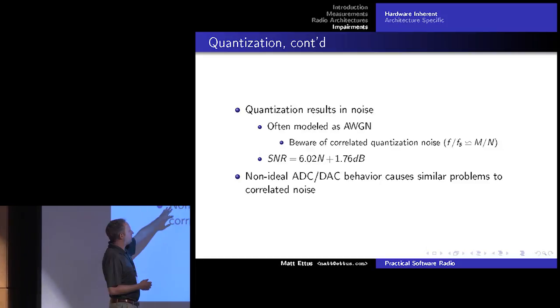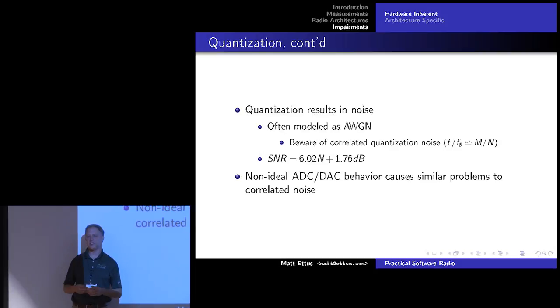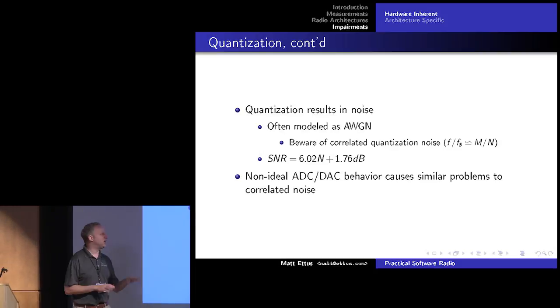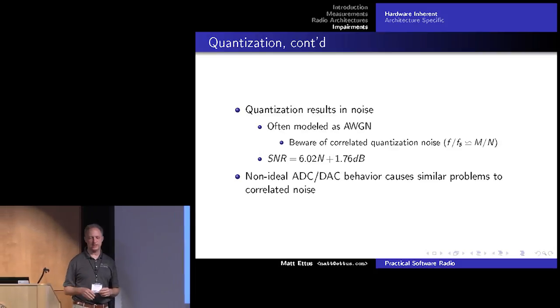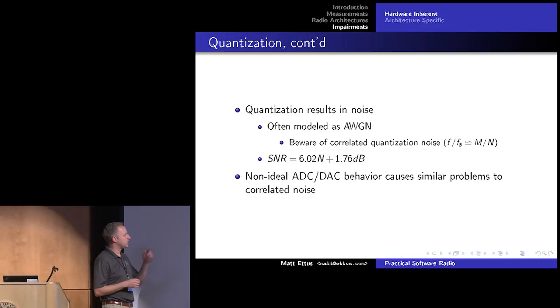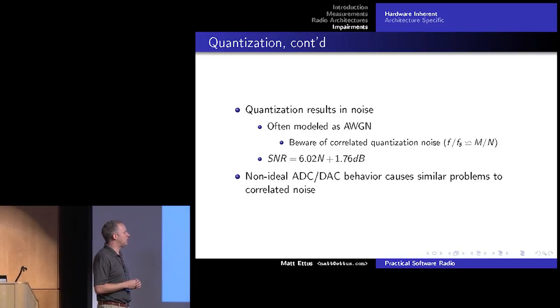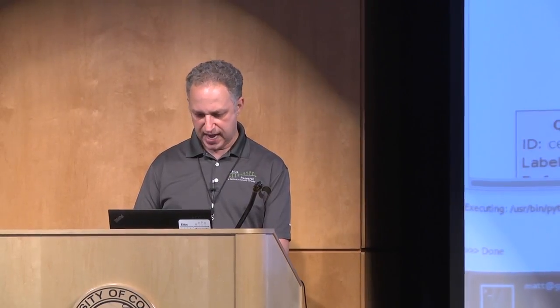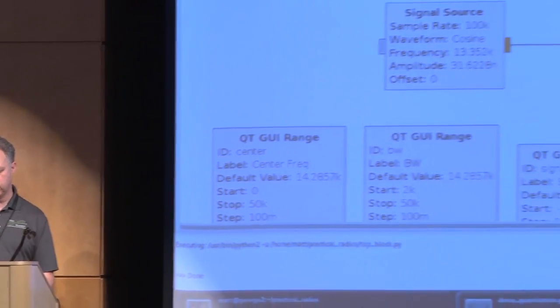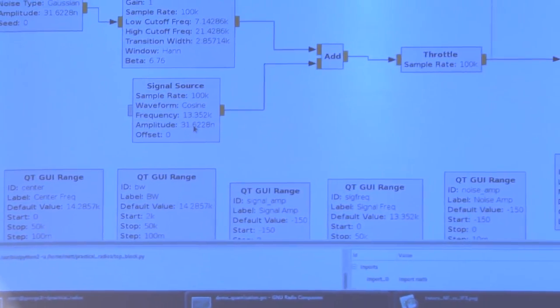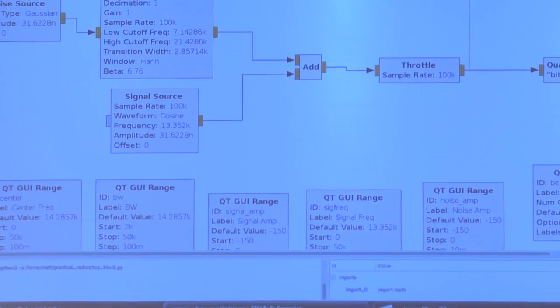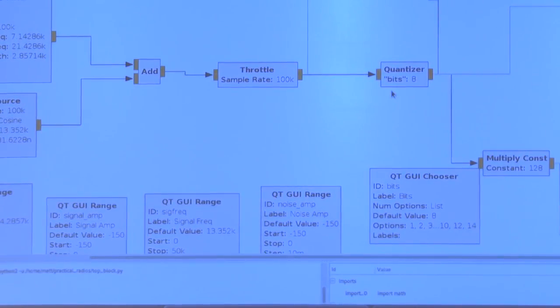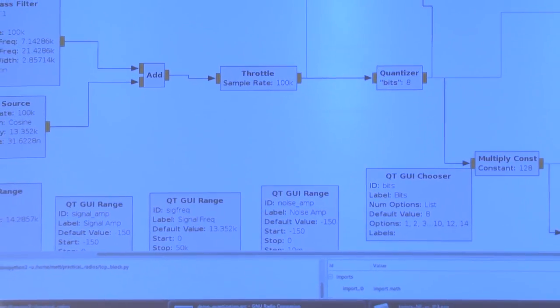In reality your A to D will not do this well, because there'll be noise on top of that and there'll be other factors. But certainly if you quantize in the computer, if you go from a float to this, that number's a reasonable approximation. So I'm gonna show another flow graph. This one about quantization. And so this is pretty straightforward. We have a noise source going through a band pass filter, and we have a signal source, which is a sine wave. I add them together, they get throttled, and then we go through a quantizer. And I have control to control the quantization.